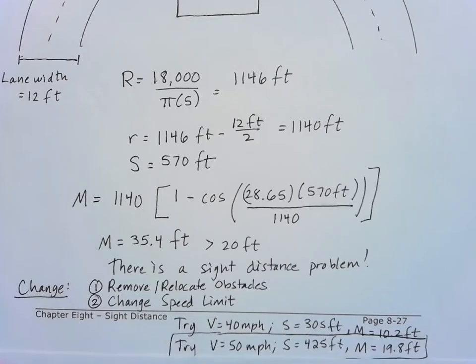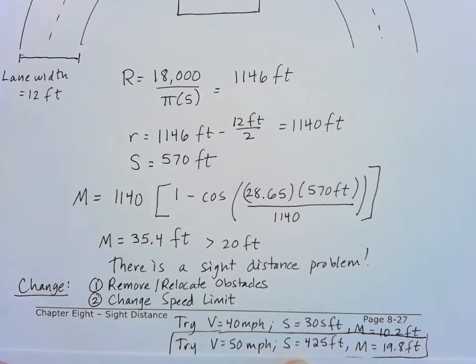Or we could try 50 miles per hour, which gives us a stopping site distance of 425 feet. Our M is 19.8. That seems like a good solution since we're looking for 20 feet there.